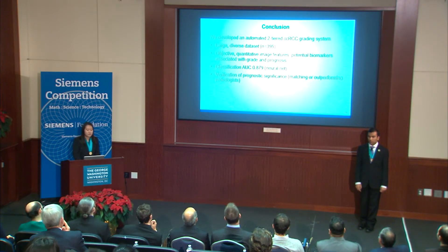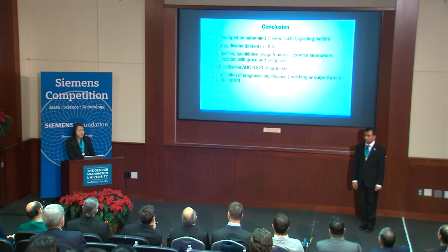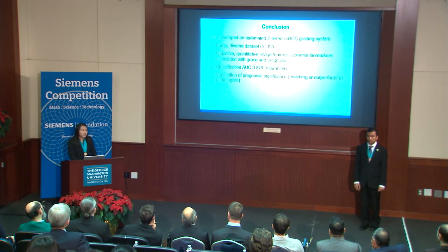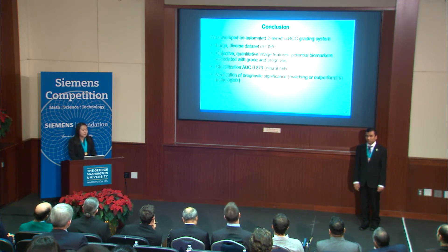In conclusion, we developed an automated two-tiered classification system that grades the Furman grade of whole-slide images. Our work was the first study done on a large and diverse dataset, as well as the first kidney cancer study to include both classification and survival analysis. We extracted quantitative image features as an objective basis for classification, which could potentially be novel biomarkers associated with grade and prognosis. We achieved a classification accuracy of AUC 0.879 and validated the prognostic significance of our results, finding that our computer model matched or outperformed pathologists, providing a valuable second opinion to help prevent misdiagnoses.